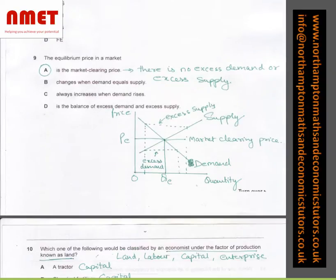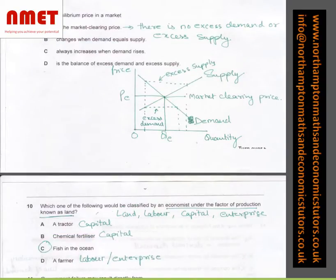In question number 9, the equilibrium price in a market is the market clearing price when there is no excess demand or excess supply, which I have explained over here in the diagram. You've got the demand curve, you've got the supply curve. So that's the excess supply and that's the excess demand. At QE, there is no excess demand or no excess supply.